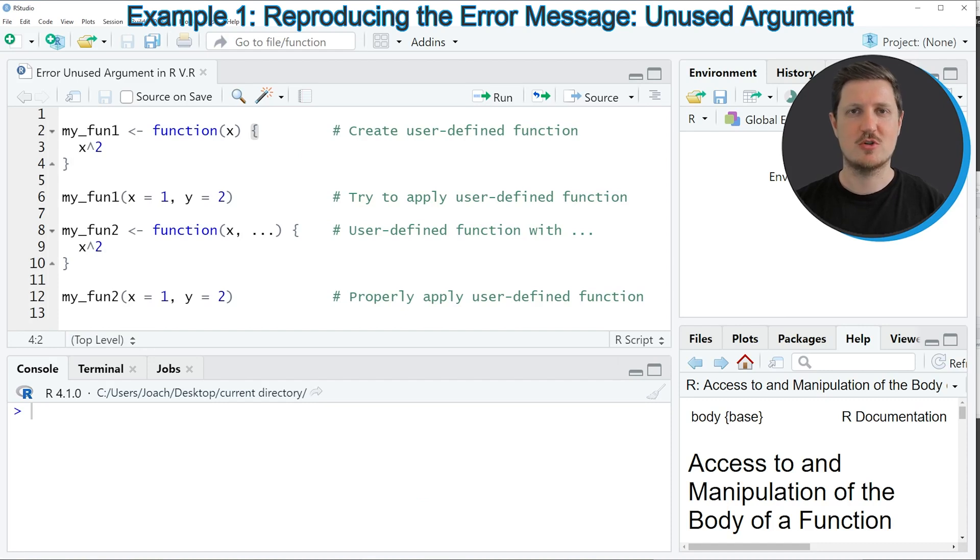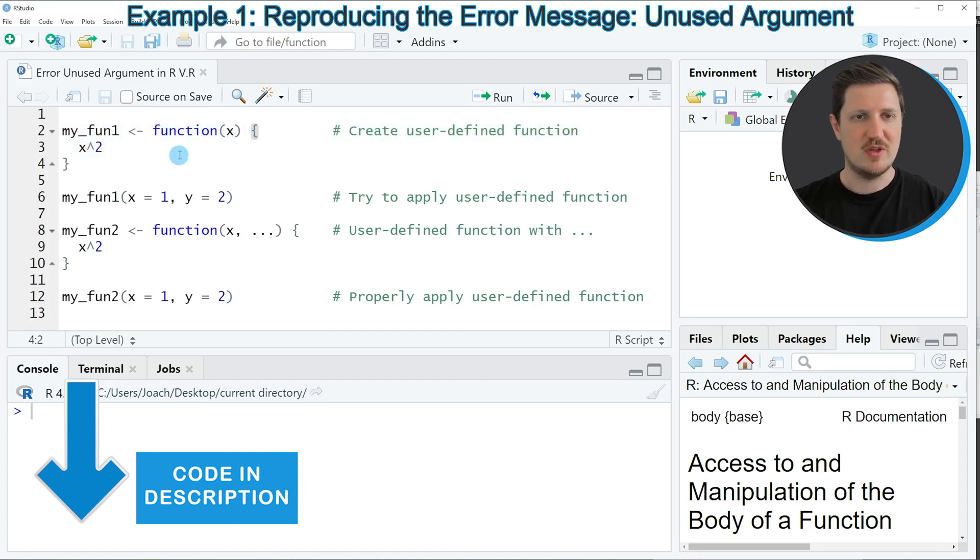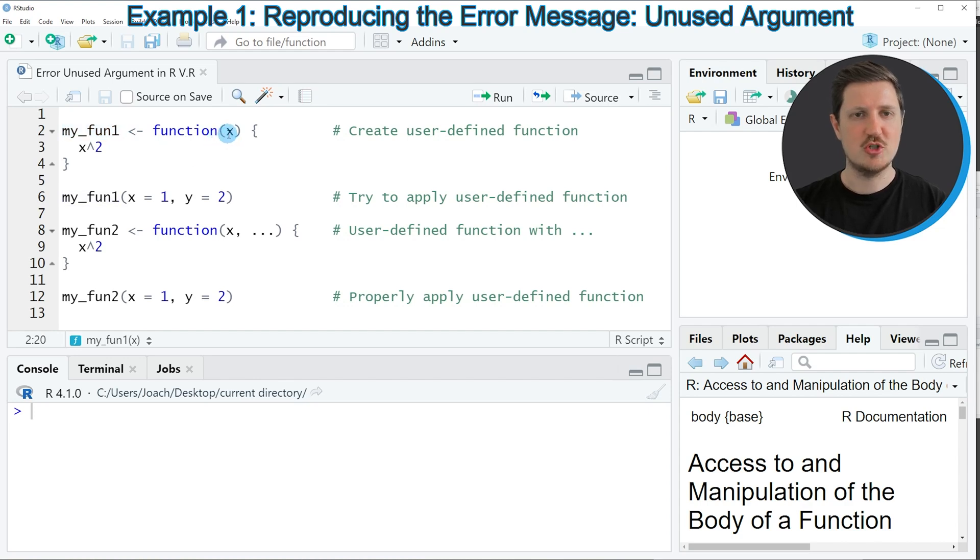As a first step in this tutorial, we need to create a user-defined function as you can see in lines 2 to 4 of the code. In these lines, I'm creating a function called myfun1, and this function takes the value x as input, performs a certain calculation, and returns the result of this calculation as an output.